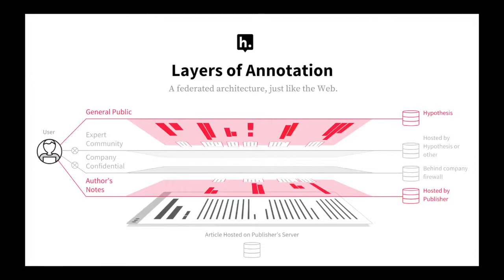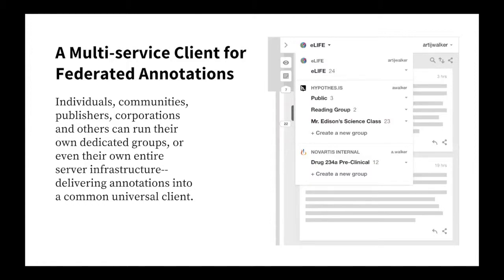The multi-service client: these different annotation layers should be able to exist together, and they should also be able to come from completely different services run by different organizations. Conceptually, in our group pull-down at the top, it might look like: eLife is running their own service, Hypothesis is running a service, and a pharma company is running a service behind their firewall for their own purposes in annotating documents. Everyone operating in very different modes within the community for different purposes.